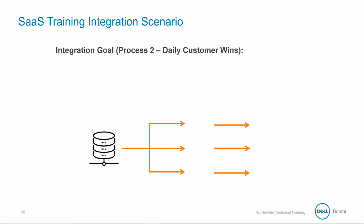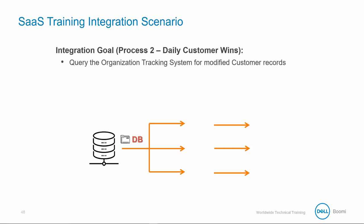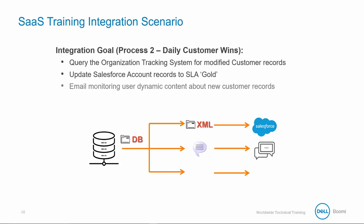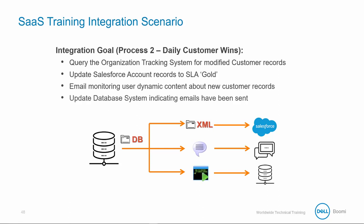Let's think about how we'll build our second process called Daily Customer Wins. The first branch will handle the querying of the database for any modified customer records. If modified records exist, we want to update the Salesforce account records to an SLA agreement of gold. Then we want to email the monitoring user information about new customer records, and update the database system indicating emails have been sent.